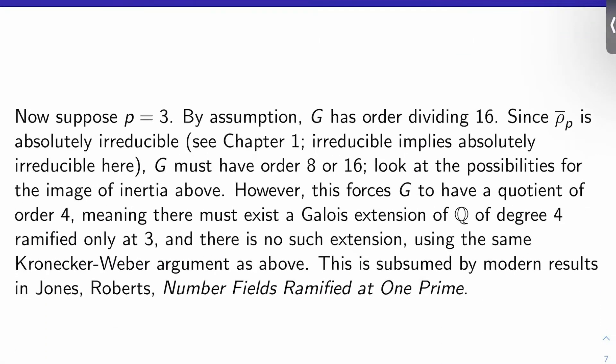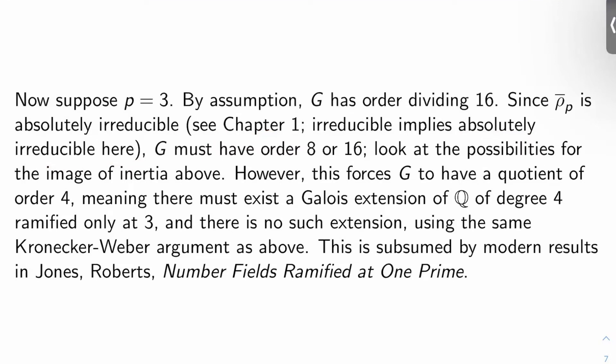What's the contradiction when P is 3? Assume P is 3. Well, by assumption, G has order dividing 16, because GL2 of F3 has 48 matrices in it, and we're assuming the image has order co-prime to 3. Now, rho bar P is absolutely irreducible, because irreducible implies absolutely irreducible in this case. And so it turns out that G actually has to have order 8 or 16. In particular, it can't be order 1, 2, or 4. The fact that it's not order 1 is clear, but the fact that it's not order 2 or 4 essentially follows from the possibilities for the image of inertia above and the fact that we're absolutely irreducible.